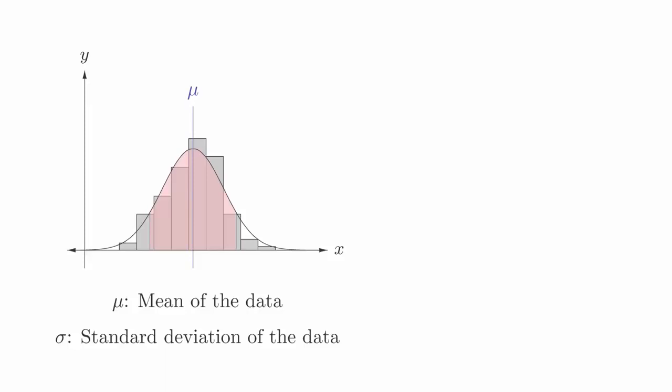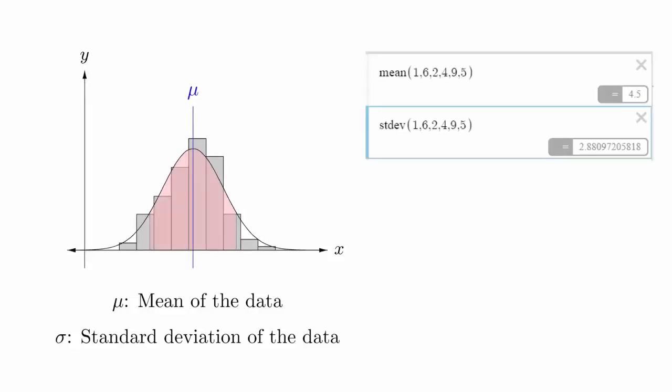The good news about mu and sigma is that we can use computers to calculate them easily. When working in Desmos, we can calculate the mean and standard deviation by using these functions. Simply type in the appropriate command, followed by the list of data points.